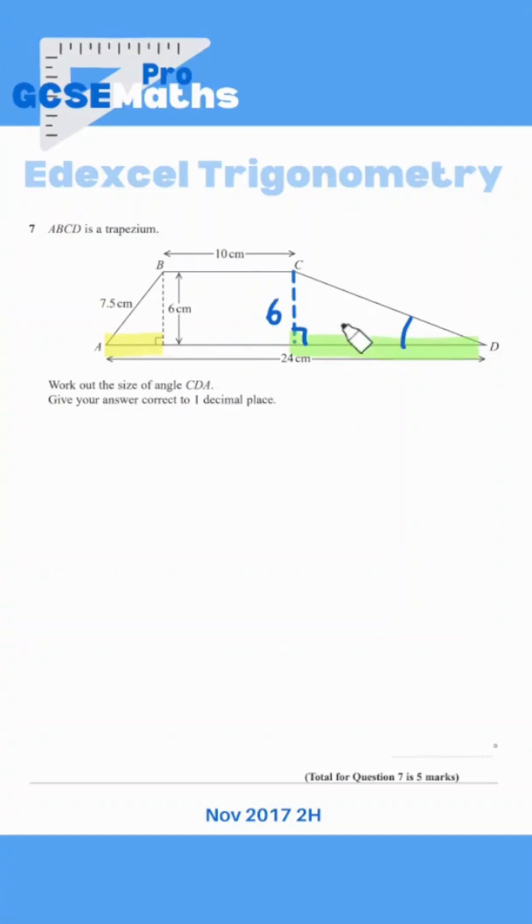For the first triangle, I can actually use Pythagoras' theorem because I have two sides and one missing. To solve that, I should get 4.5 centimeters for A.